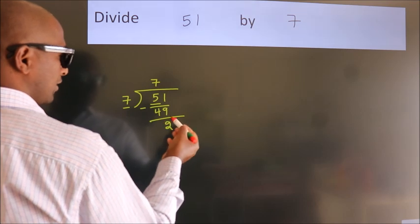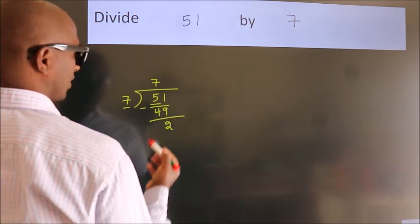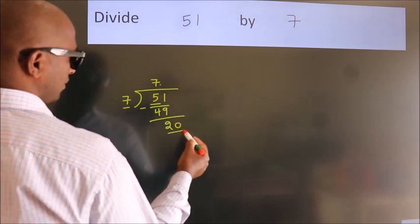After this, no more numbers to bring it down. So what we do is, we put dot take 0. So 20.